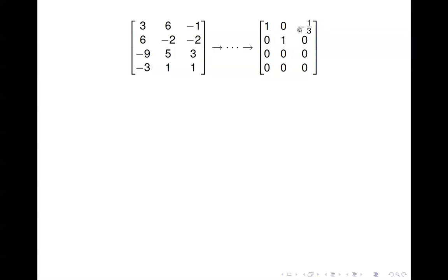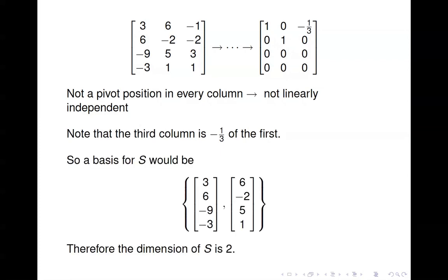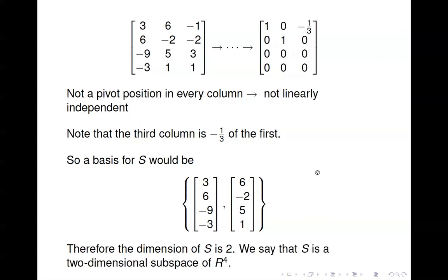The negative one-third in the reduced echelon form means that the third column is minus one-third of the first column — minus one-third of three is negative one, minus one-third of six is negative two, and so forth. So we can throw out that third vector, and a basis for S consists of just the first two vectors. Counting those, the dimension of S is two. We don't say that S is R2 because these vectors are in R4; what we say is that S is a two-dimensional subspace of R4.